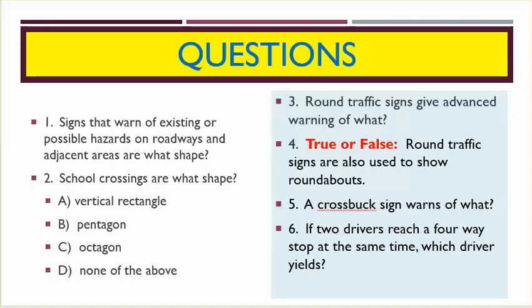Signs that warn of existing or possible hazards on roadways and adjacent areas are what shaped? Number two, school crossings are what shape? A: vertical rectangle, B: pentagon, C: octagon, D: none of the above.